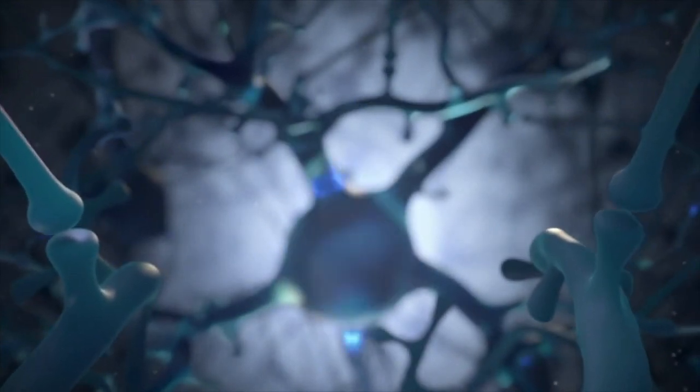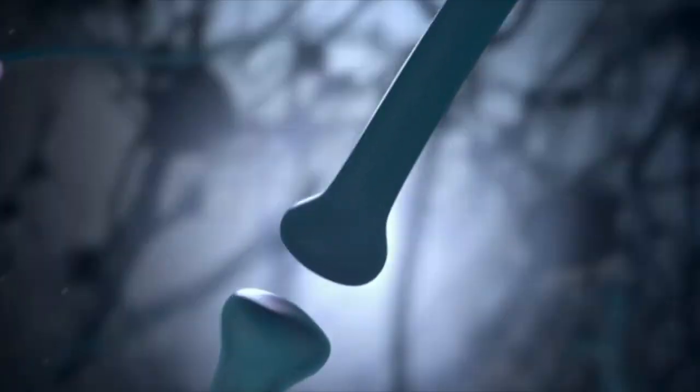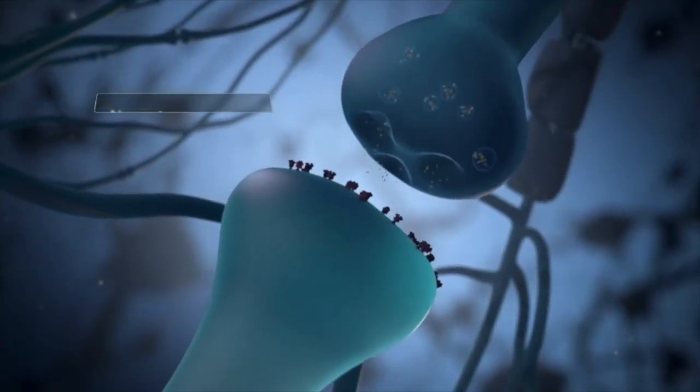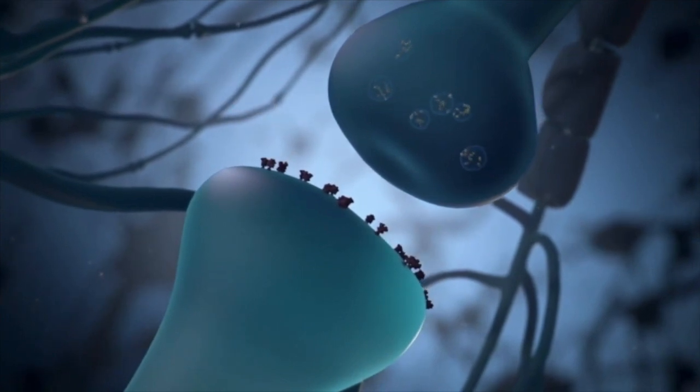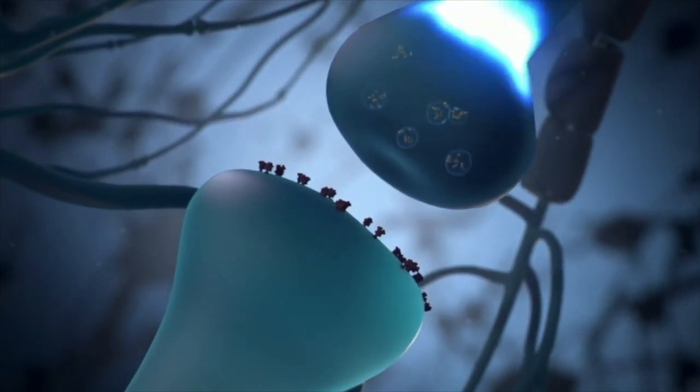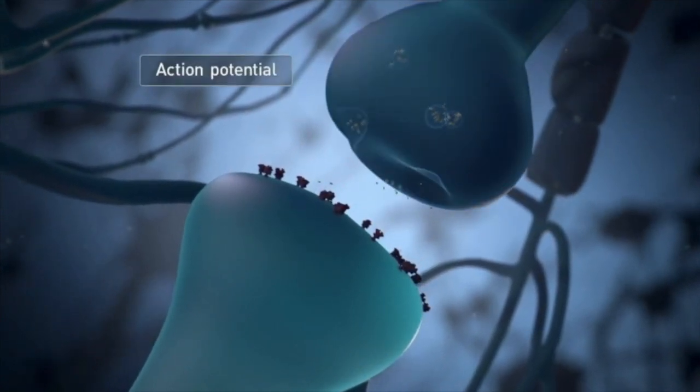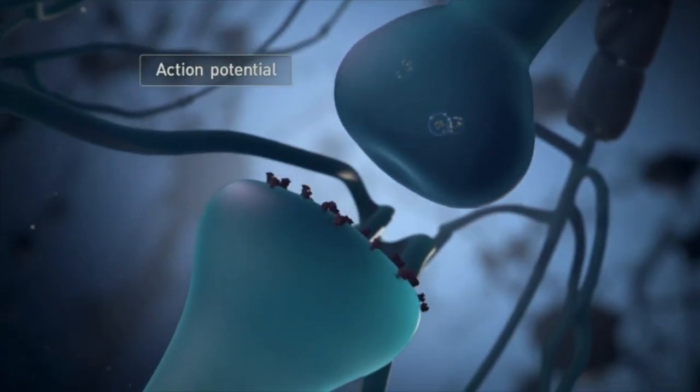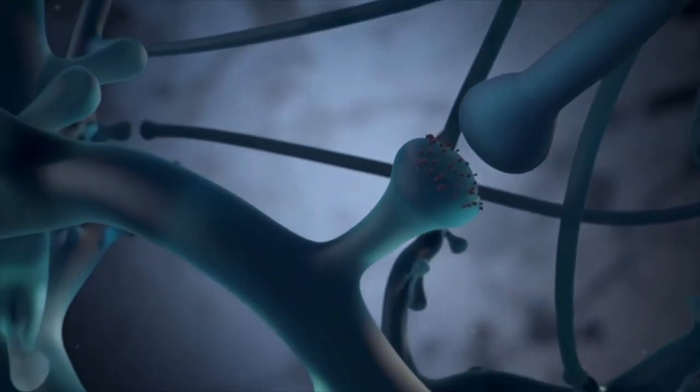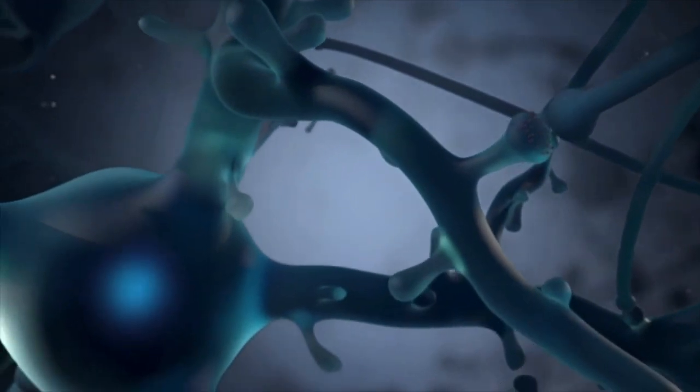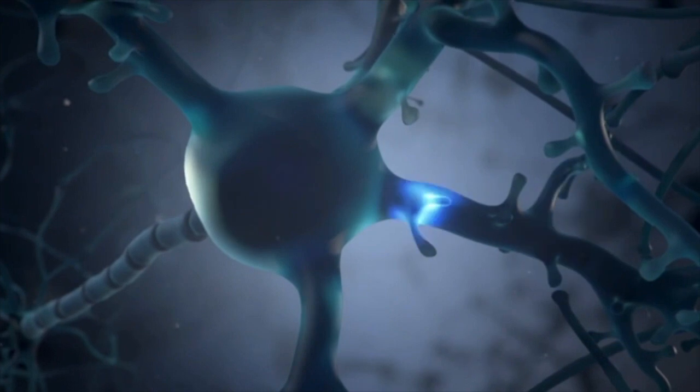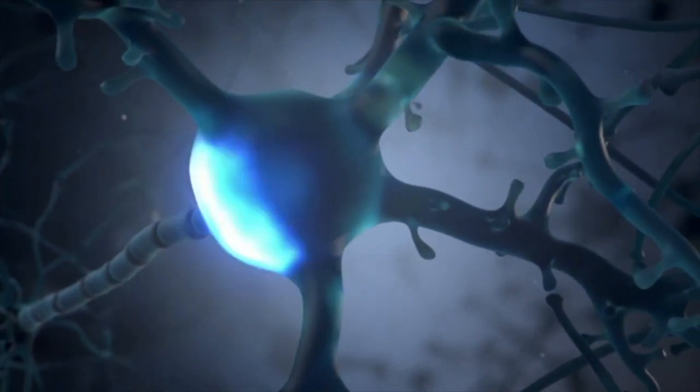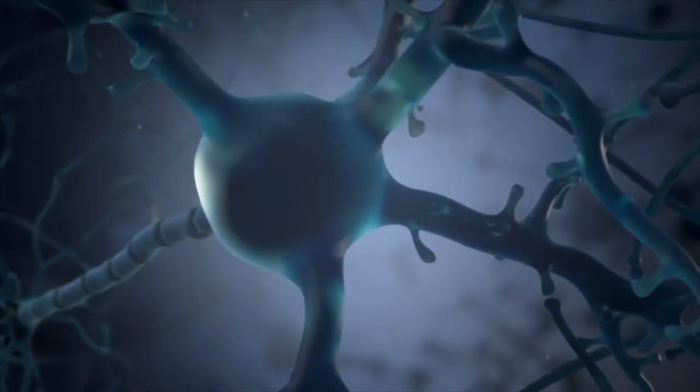At these connection points, neurons communicate with each other using chemical signals called neurotransmitters. Neurotransmitters are released from the end of an axon in response to an electrical spike called an action potential. When a cell receives enough of the right kind of neurotransmitter input, a chain reaction is triggered that causes an action potential to fire, and the neuron to in turn relay messages to its own downstream synapses.